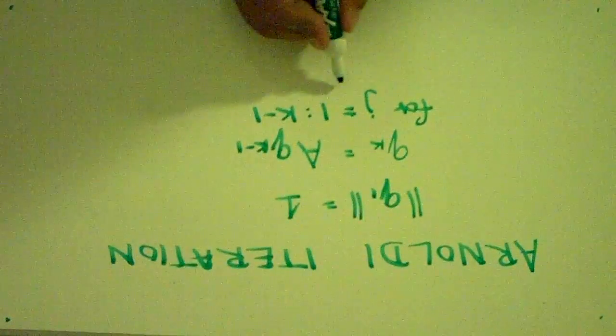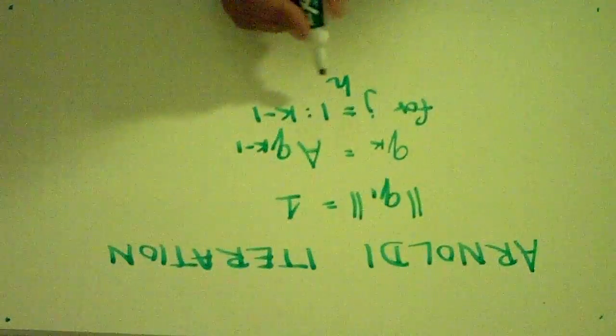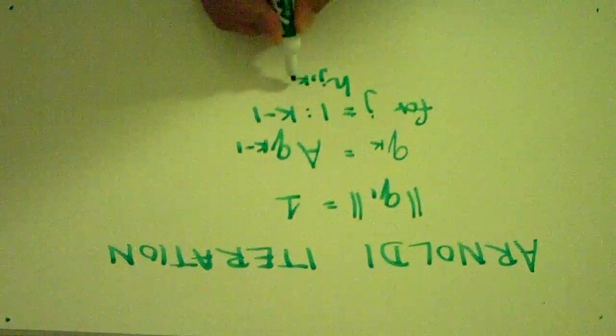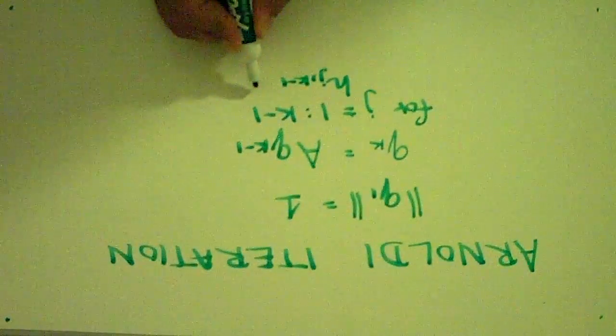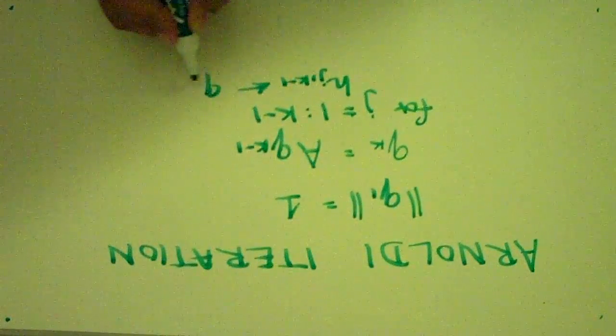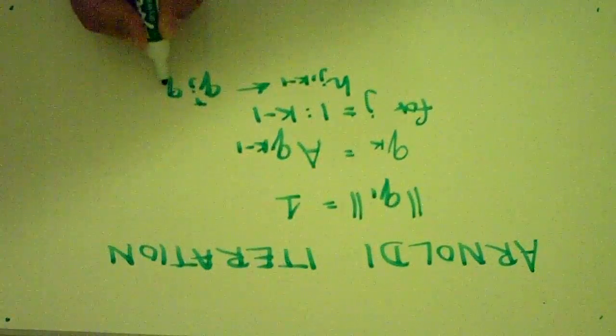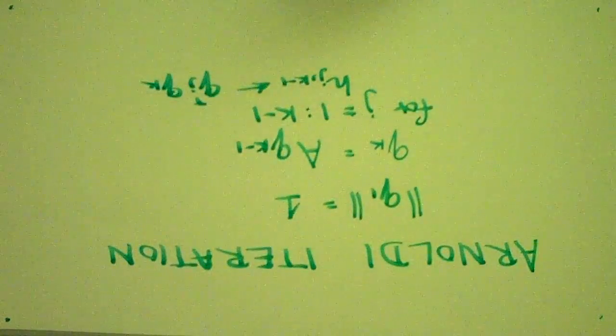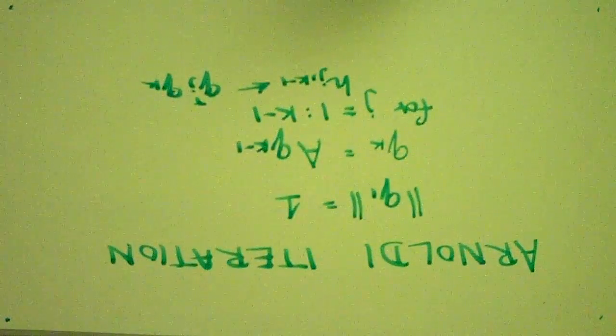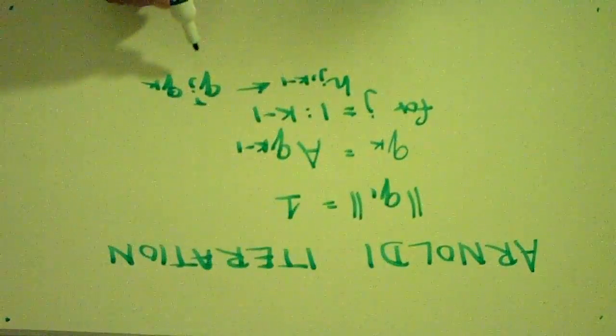We would find, then, the vector known as H, J K minus 1. And we would set this equal to QJ transpose QK. This is the scalar that defines the length of the projection onto the vector J.